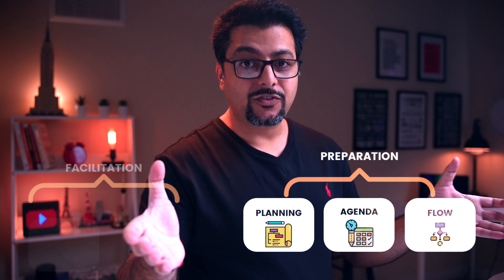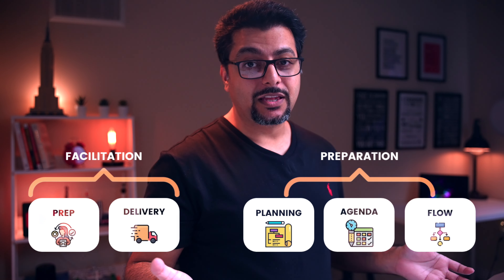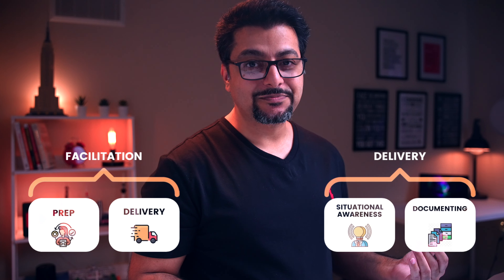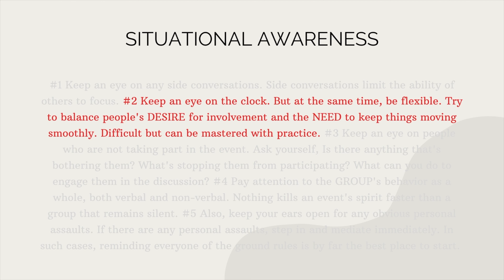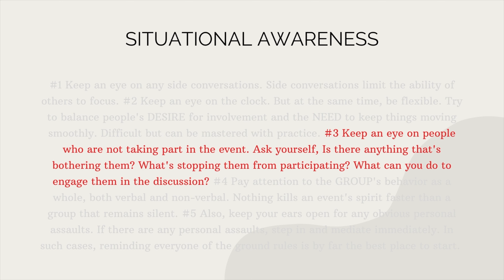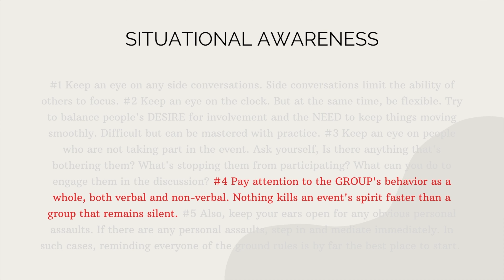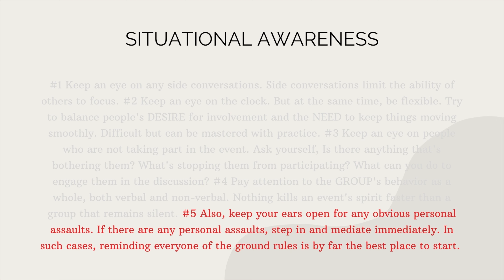So those were the three components of preparation — the first part of becoming a star facilitator. The second part is delivery, and delivery has two components. The first component is situational awareness. Keep an eye on side conversations — they limit the ability of others to focus. Keep an eye on the clock, but be flexible: try to balance people's desires for involvement and the need to keep things moving smoothly. Keep an eye on people who are not taking part — ask yourself what's stopping them and how you can engage them. Pay attention to the group's behavior as a whole, both verbal and non-verbal. Nothing kills an event's spirit faster than a group that remains silent. Keep your ears open for any obvious personal assaults; if there are any, step in and mediate immediately — reminding everyone of the ground rules is the best place to start.